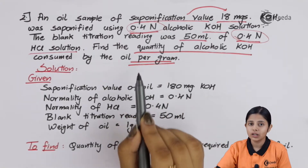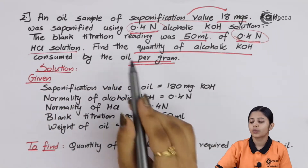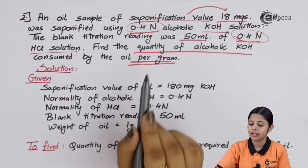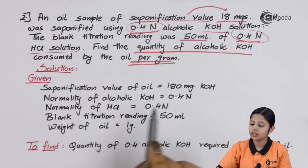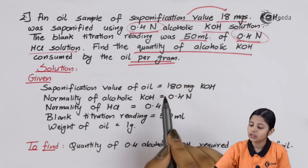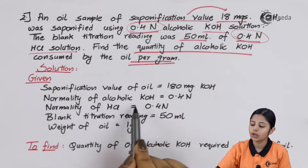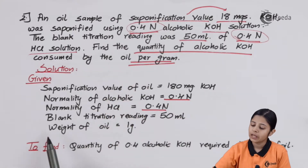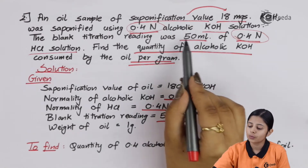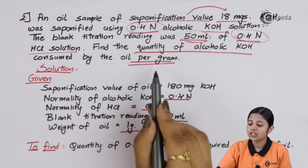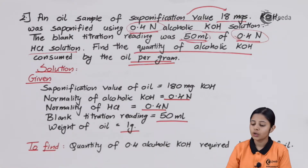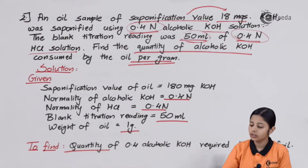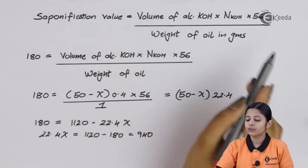The phrase 'per gram' means the quantity of oil is 1 gram — they haven't given a direct numeric value, but 'per gram' means oil = 1 gram. Summary of given data: saponification value = 180 mg, normality of alcoholic KOH = 0.4, normality of HCl = 0.4, blank titration reading = 50 ml, weight of oil = 1 gram. We must find the volume of 0.4 N alcoholic KOH required for 1 gram of oil.